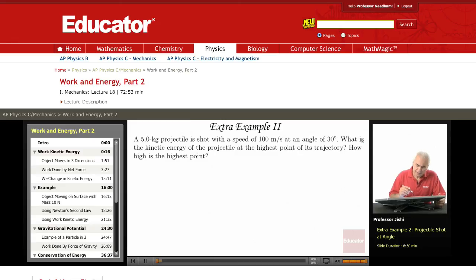Okay, in this example we have a projectile which is shot at a speed of 100 meters per second at an angle of 30 degrees. So here's 100 meters per second at 30 degrees.